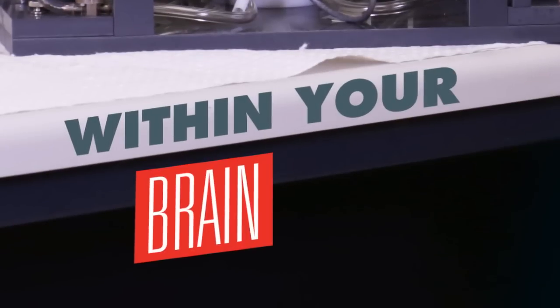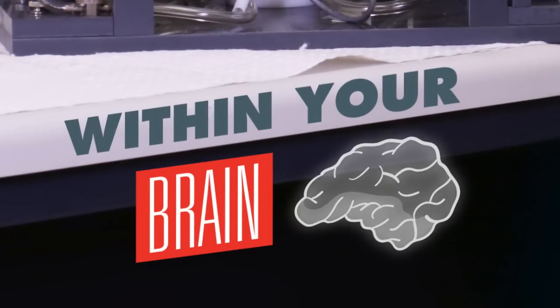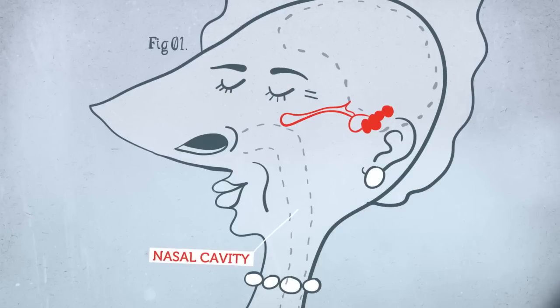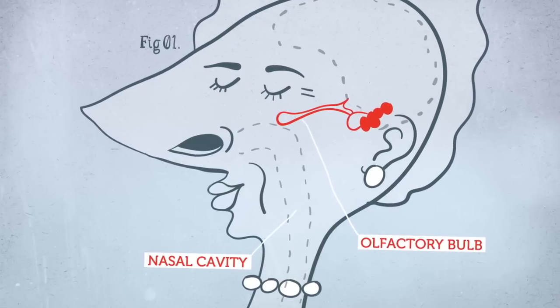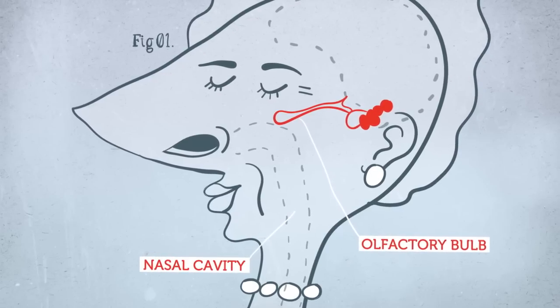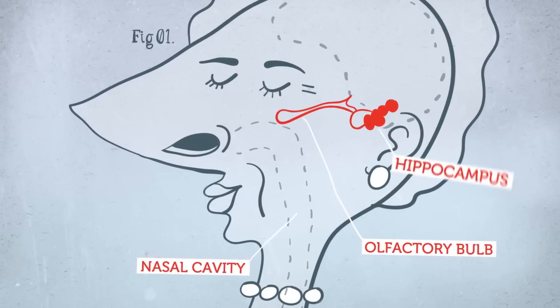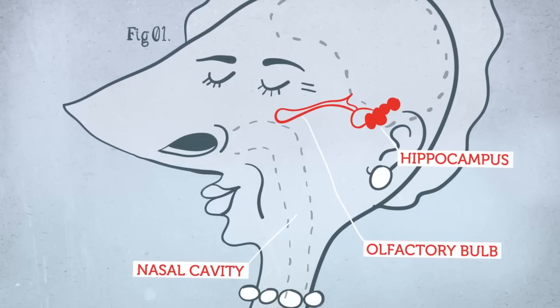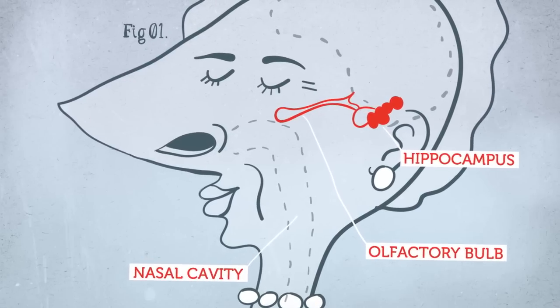Within your brain, the areas responsible for smell and memory are closely related. The olfactory bulb is part of the brain responsible for processing smells. It sits next to the hippocampus, which is a convergent point for information arriving from all over the cortex.